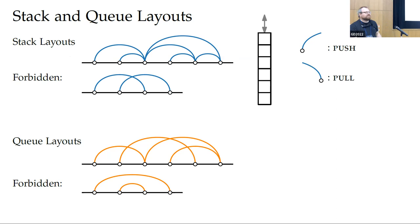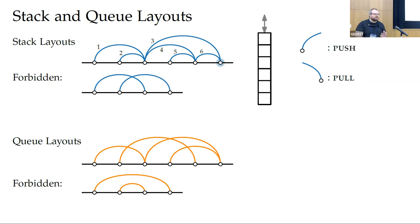Let's look at an example. We start with edge one, push it onto the stack, push number two, then pull both from the stack. We push number three, four, five, and now we pull five and four. We push number six, then pull three and six. This corresponds to the order in which we put items onto a stack and remove them.